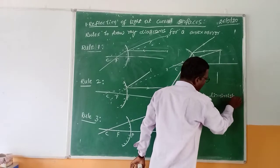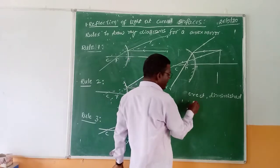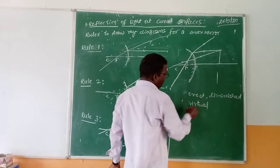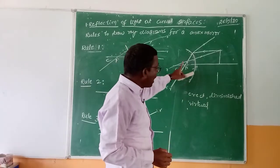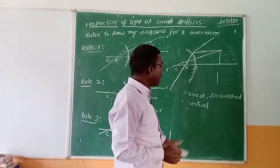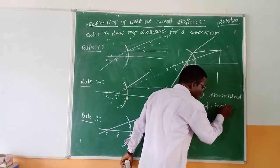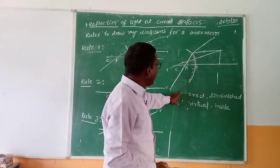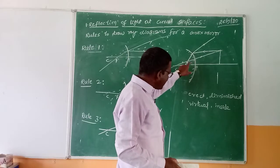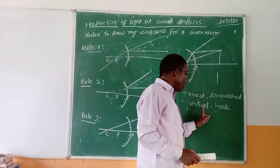The image is erect and smaller, so we say the image is diminished. The image cannot be caught on a screen, so we say the type of image is a virtual image. The image in a convex mirror always forms inside the mirror.